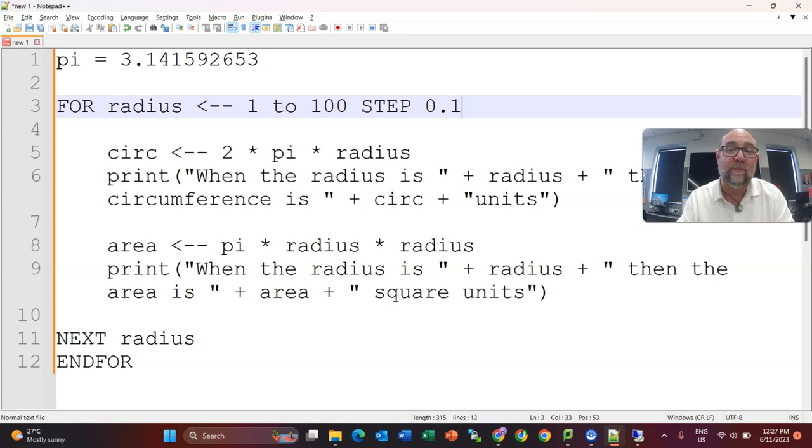And then it would do it for 1.1, 1.2, 1.3. And so you could build basically a chart where you could look up the area and circumference by a circle, and it would kind of print a table for you doing that.